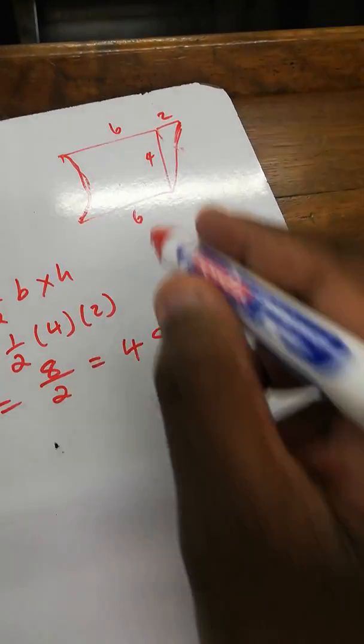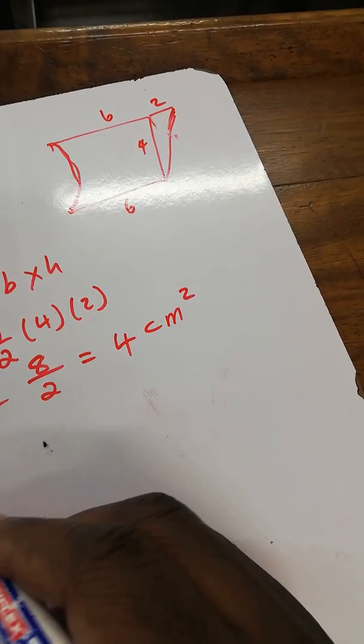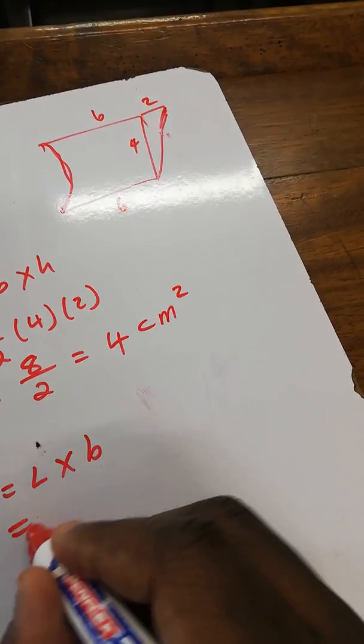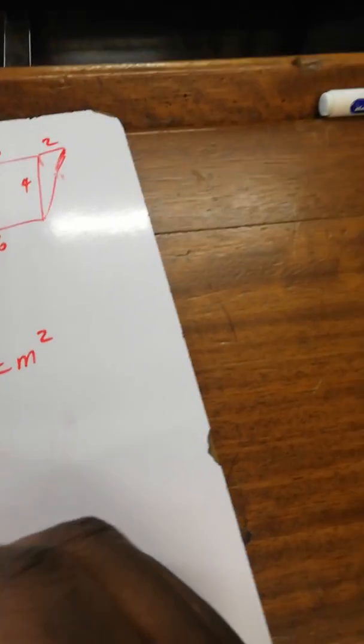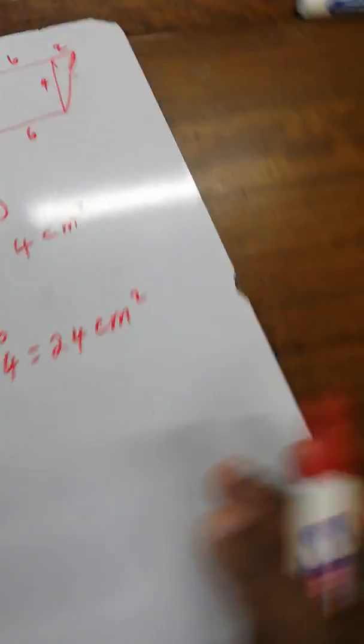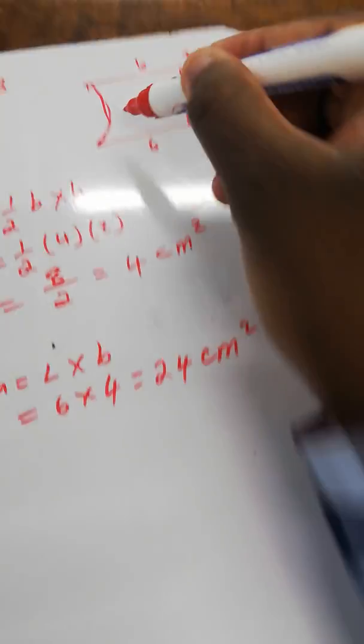That's twenty-four centimeters squared. Then number three, we calculate for the circle. Because this is a semicircle, we calculate for the whole circle then divide by two.